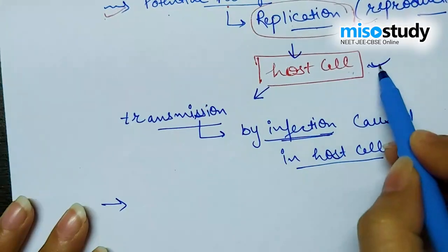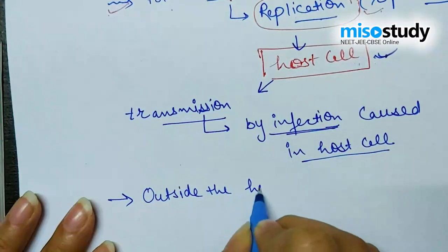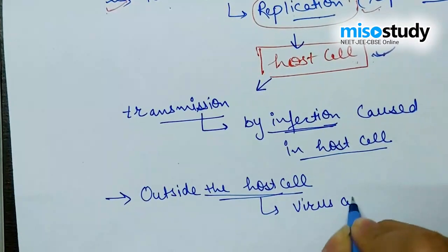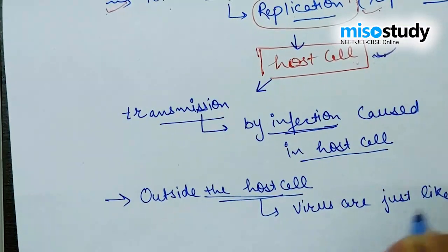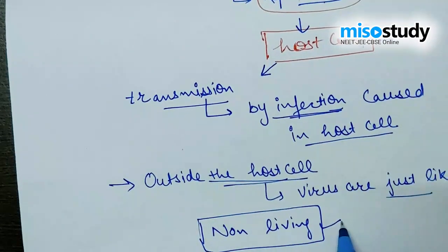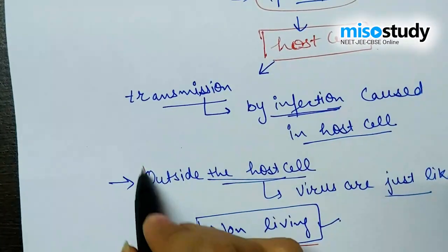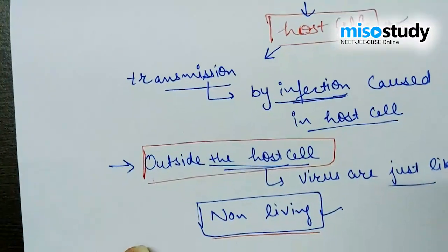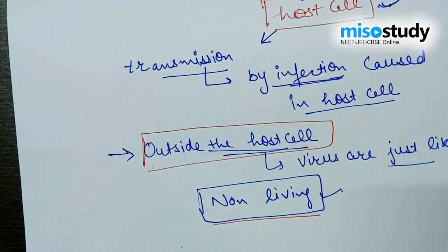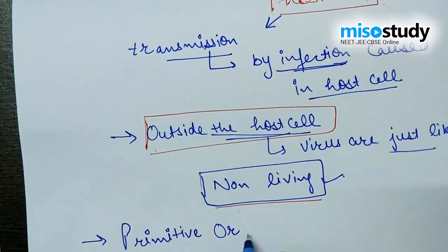When the virus is outside the host cell, viruses are just like non-livings. So virus is the one which possesses both properties — non-living when outside the host cell, and living when inside the host cell. Due to all these facts related to virus, we name it as a primitive organism.